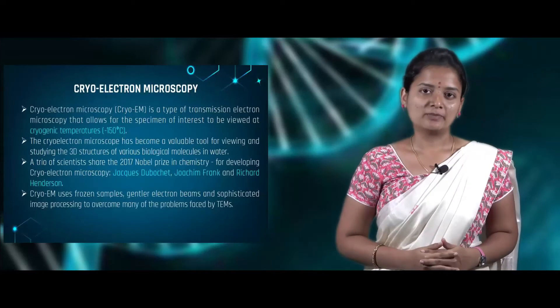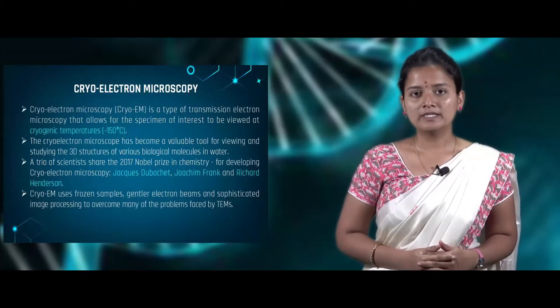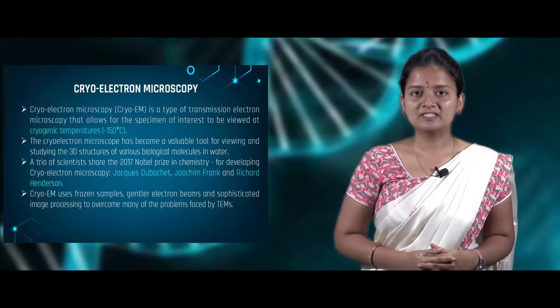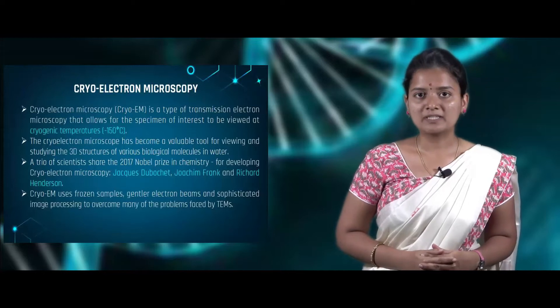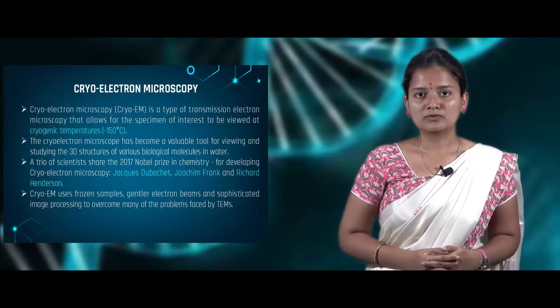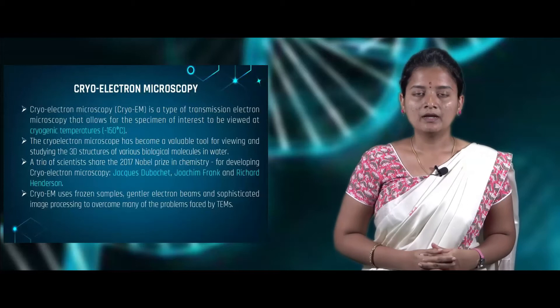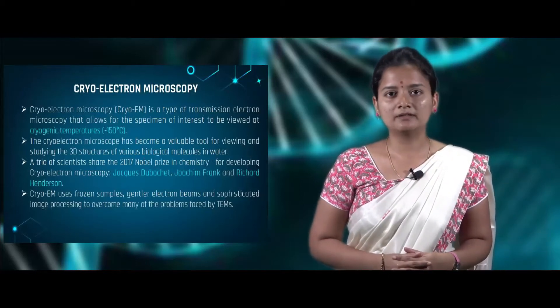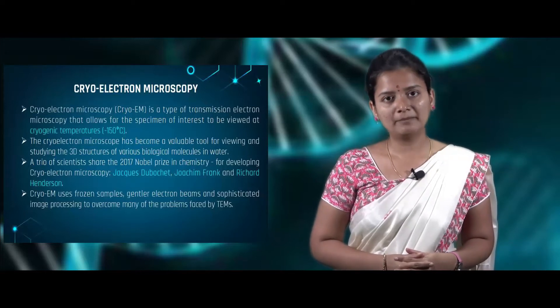Good morning everyone. In the last session we discussed about NMR spectroscopy. In today's session we'll be dealing with another experimental method to determine the protein structure called cryo electron microscopy. Cryo electron microscopy is one of the transmission electron microscopy methods where the sample of interest is imaged at cryogenic temperature, that is at minus 150 degrees Celsius. It is the most valuable and useful method to determine the 3D structure of many biological molecules.